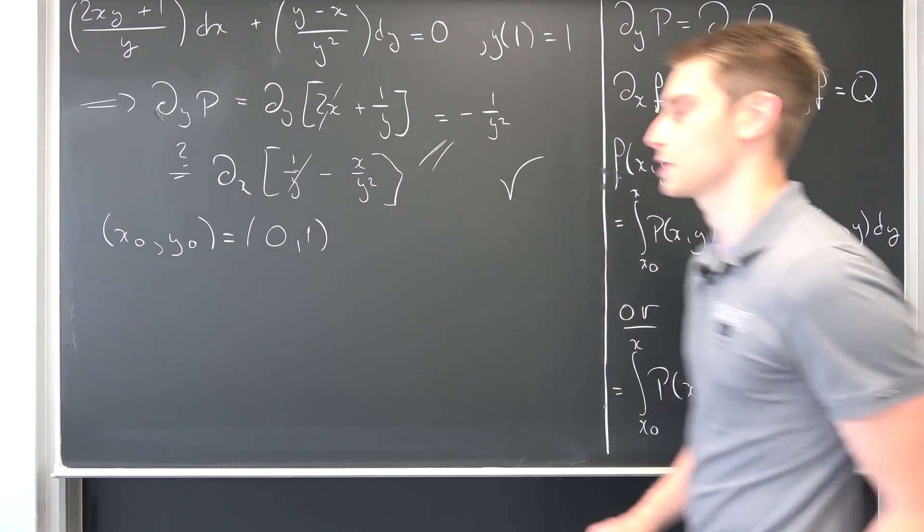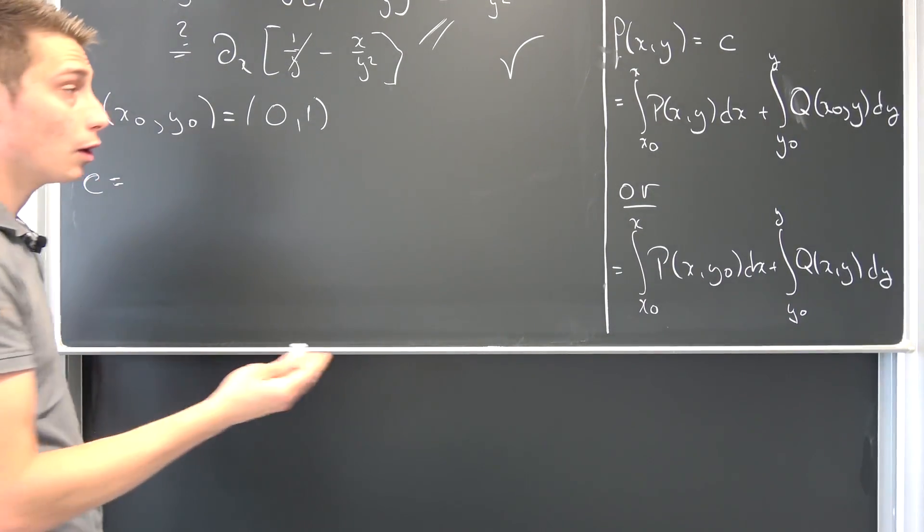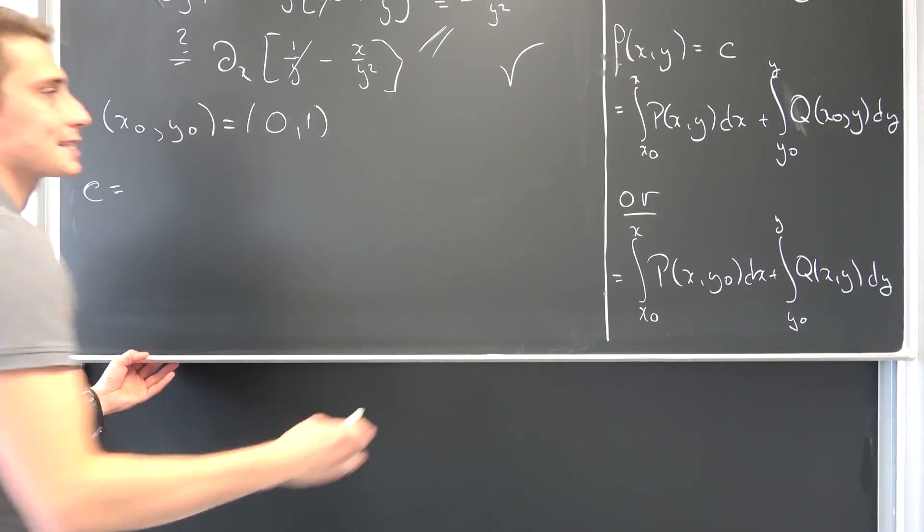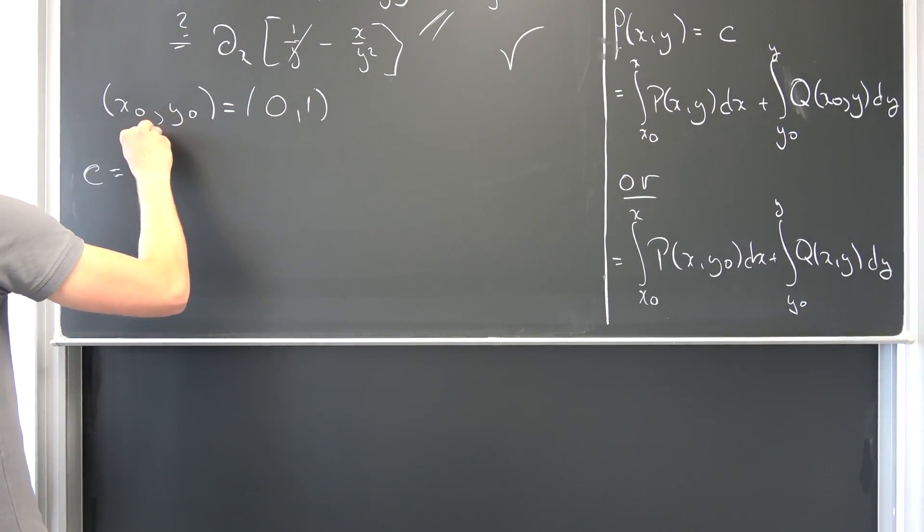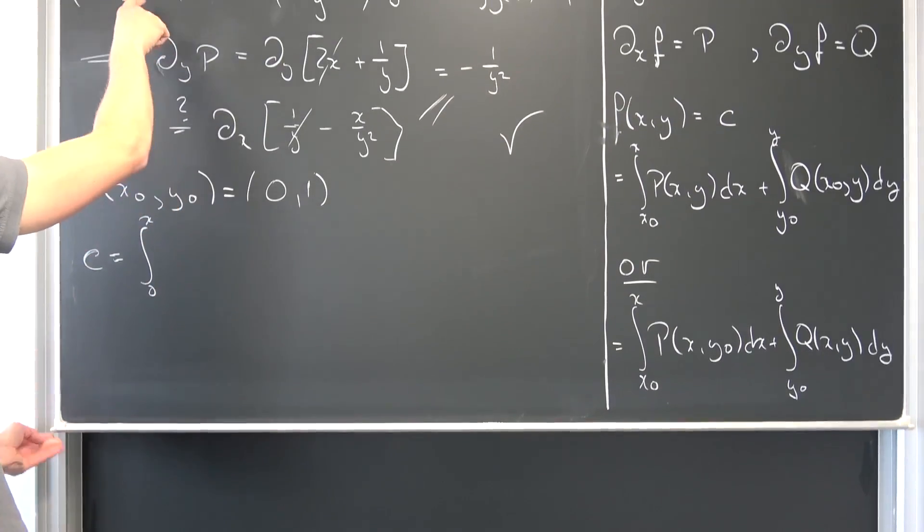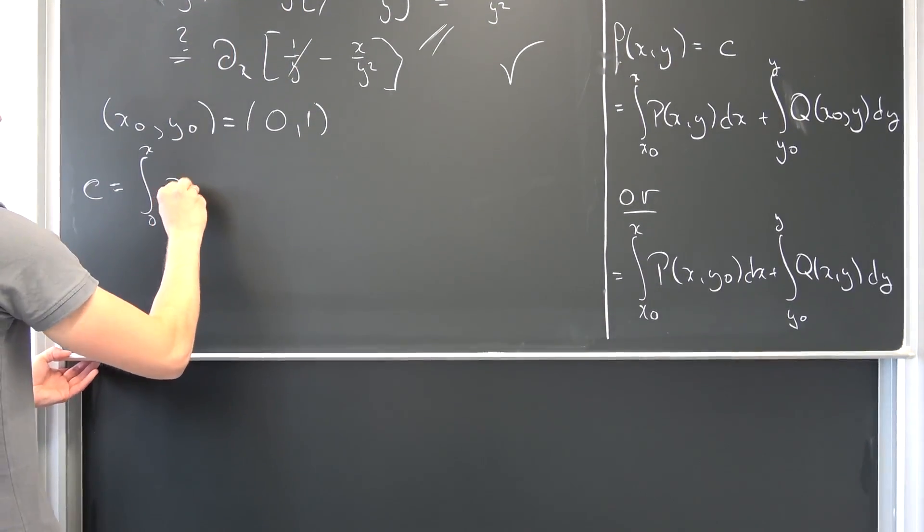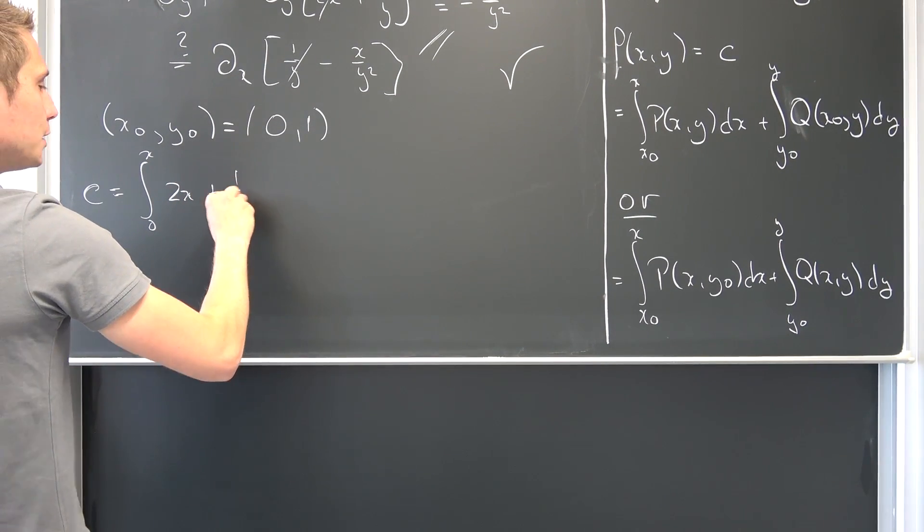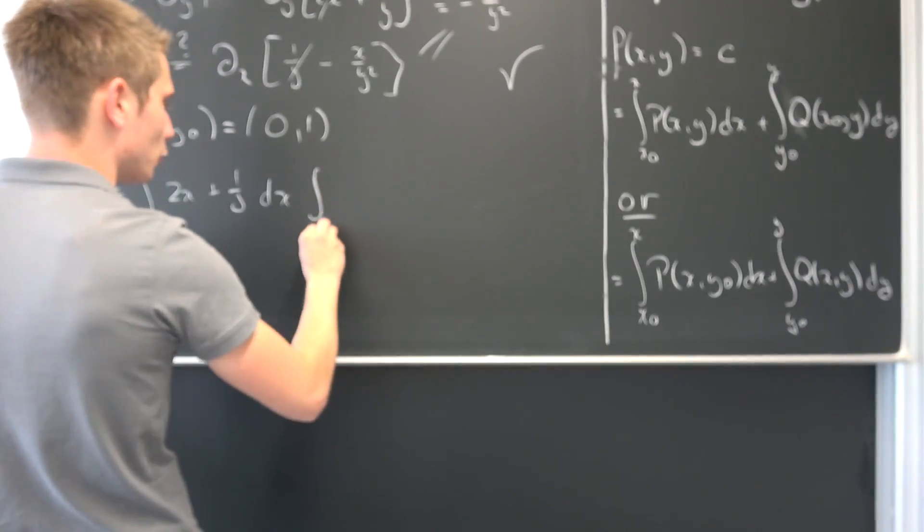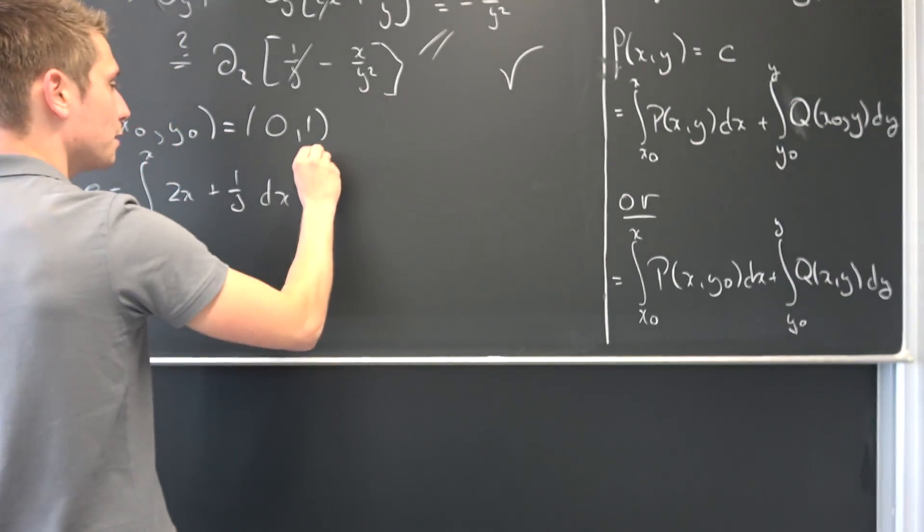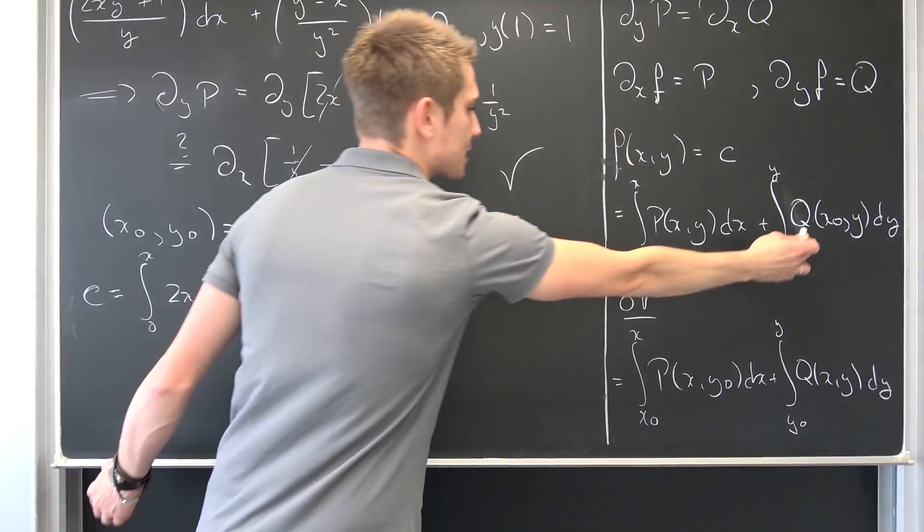Now we can make use of those formulas, meaning our one parameter family of solutions C, or f(x,y), is thus nothing but this thing right here. x₀ is nothing but 0, so from 0 to x of P—P is nothing but this thing right here. I'm going to split it up just like we did before. We are going to get 2x plus 1/y dx, and then an integral from 1—this time y₀ is 1—to y of Q when we plug in x₀.